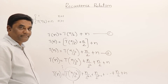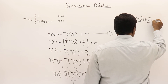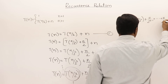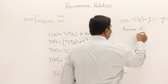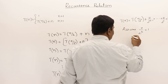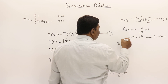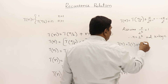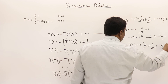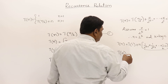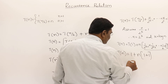So T(n) = T(n/2^k) + n/2^k + n/2^(k-1) + ... + n/2² + n/2 + n. We assume n/2^k = 1, meaning we've reached n = 1. Therefore n = 2^k and k = log n. Substituting back: T(n) = T(1) + n × (1/2^(k-1) + 1/2^(k-2) + ... + 1/2 + 1). This whole geometric series is approximately 1, so T(n) ≈ 1 + n × 1 = 1 + n, which is O(n).